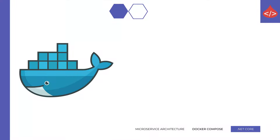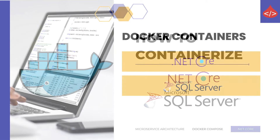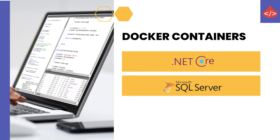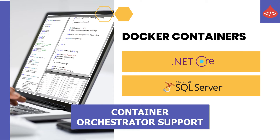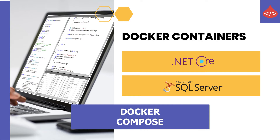Welcome to Coding Droplets. In this video we are going to see how to containerize a .NET Core application with a SQL Server database. We need to create two containers — one for the .NET Core application and another one for SQL Server. We'll be adding container orchestrator support for our project and make use of Docker Compose to deploy the application with all the Docker images needed.